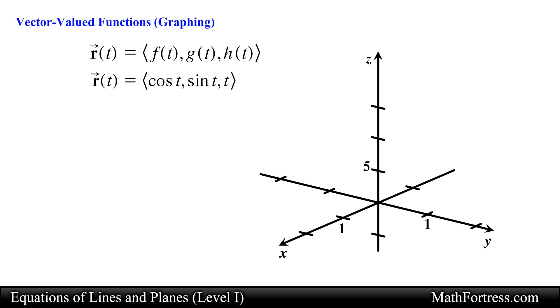Naturally we can extend vector-valued functions to 3 dimensional space by introducing a third component, in this case the z component, which is represented by the function h of t in the general form of a vector function in R cubed. Just like the vector function in R squared,